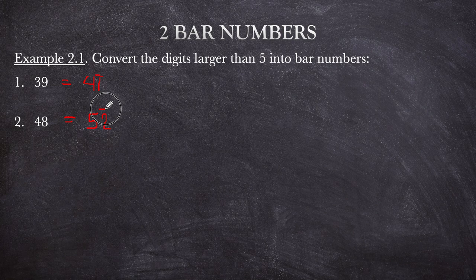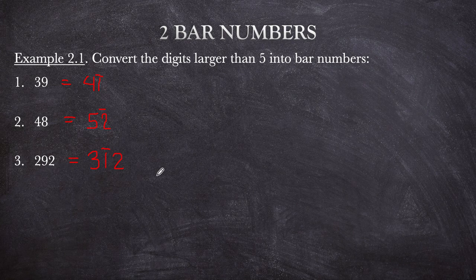For 292: only the 9 in the middle needs converting. We add 1 to 2 and put bar 1 there, then copy the 2 after it in the ones digit. So that's 3 bar 1, 2.